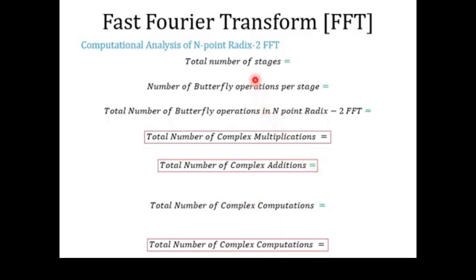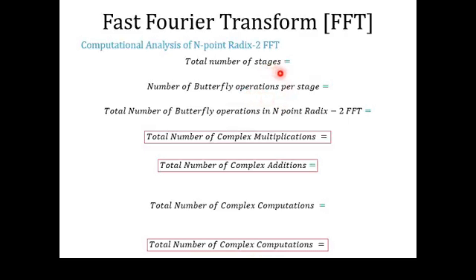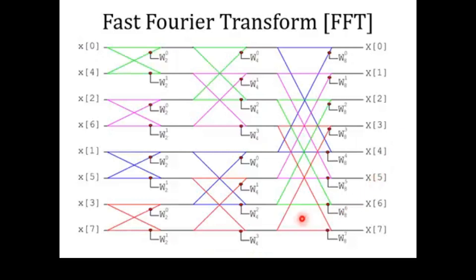Now that we know the computations for a single optimized two-point butterfly, we can find the total computations for the whole radix-2 FFT structure. We need two things: the total number of stages, and the number of butterfly operations per stage. For the eight-point radix-2 FFT structure, there are three stages: stage one gives the two-point DFT output, stage two gives the four-point DFT output, and stage three gives the eight-point DFT output.